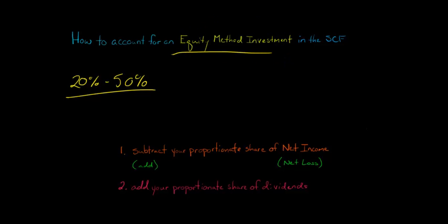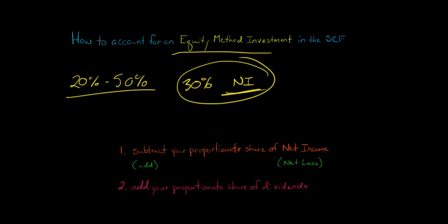This is going to present some unique challenges for the statement of cash flows, because with the equity method investment, you're going to recognize a proportionate share of the investee's net income. So if you own 30 percent of that company, then your company is going to recognize 30 percent of that company's net income or net loss, and that's going to be added to your company's net income or loss.